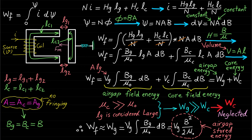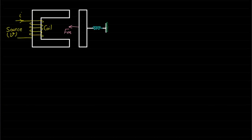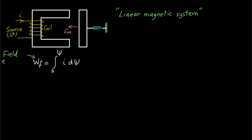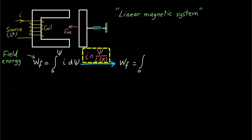Neglecting the core field energy means that the field energy mainly results from the contribution of the air gap field energy. This also means we are magnetically linearizing the magnetic circuit — in other words, the relay magnetic system is treated as a linear magnetic system. Since we are already considering the relay system as a linear magnetic system, we can develop a formula for the field energy in terms of magnetic circuit inductance by using the linear magnetic field linkage formula ψ = L·I.